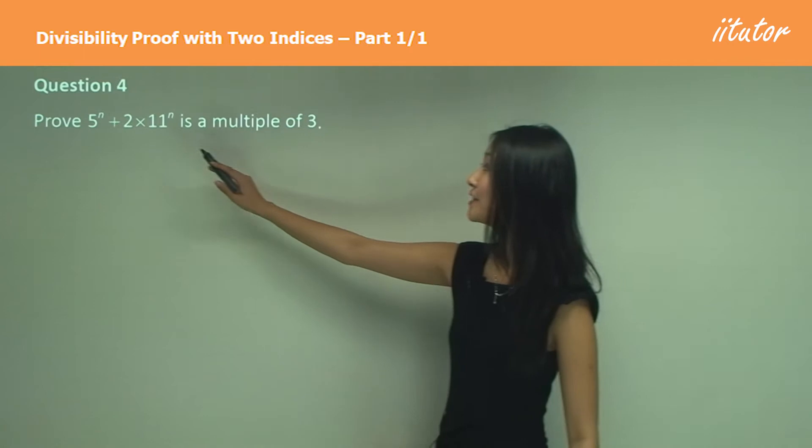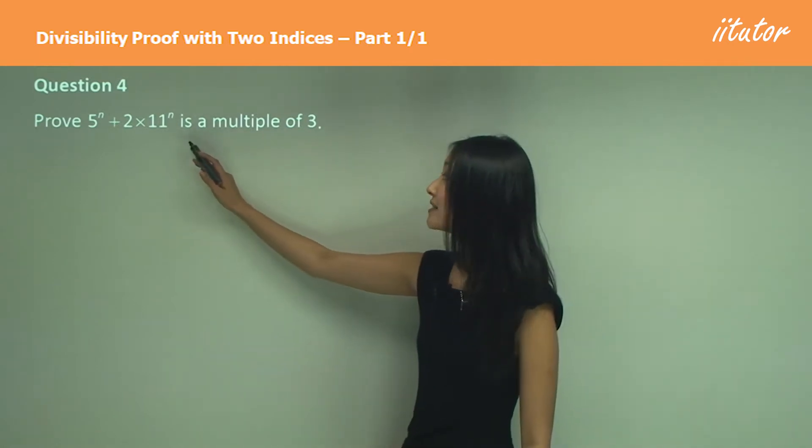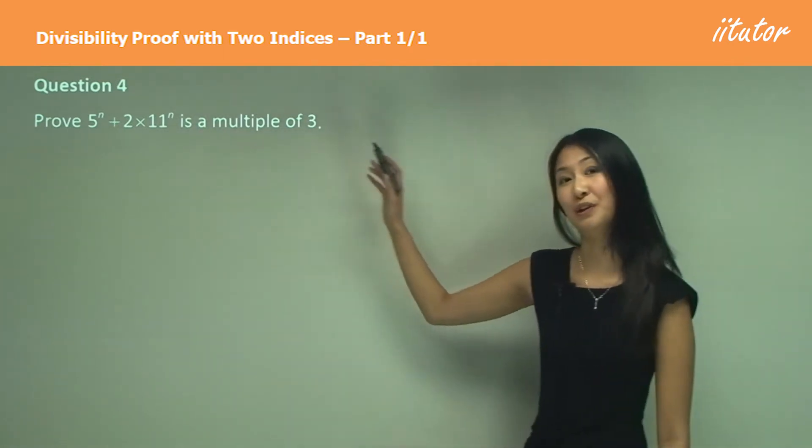We want to prove that 5 to the power of n plus 2 times 11 to the power of n is a multiple of 3.